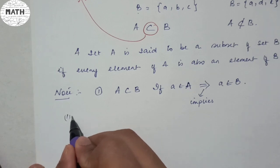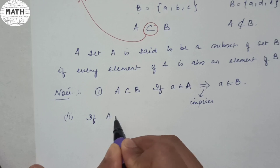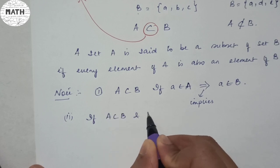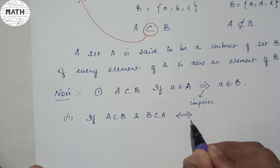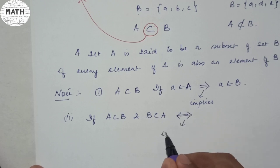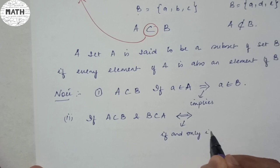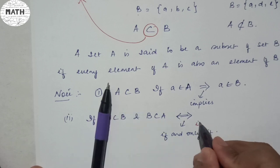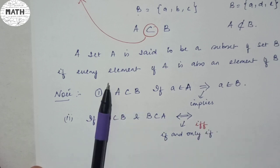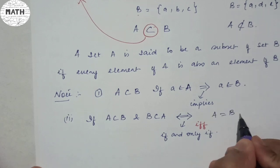Then comes point number two: if A is a subset of B and B is a subset of A, this sign is known as 'if and only if', also denoted as 'iff' — then A is equal to B. That's your point number two.